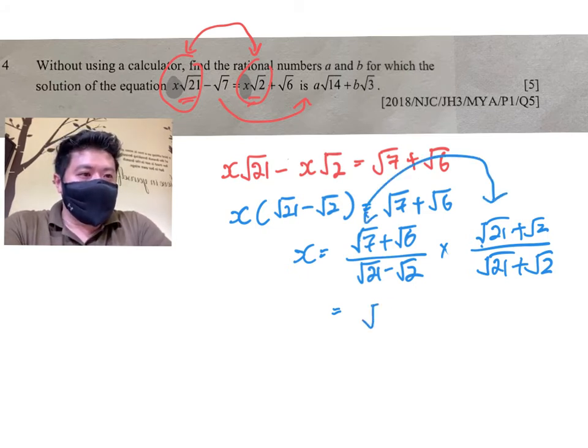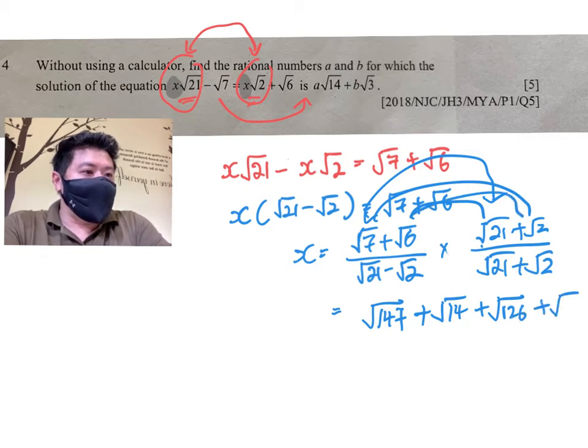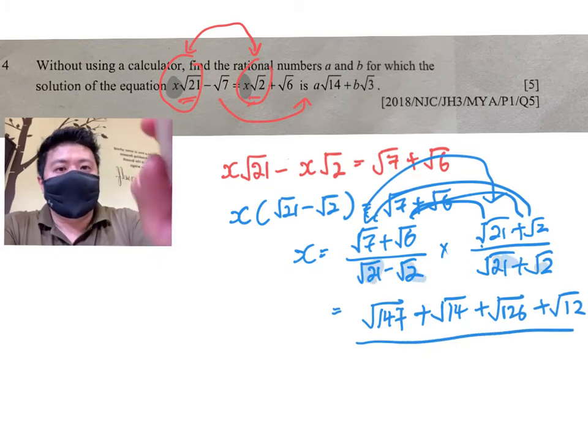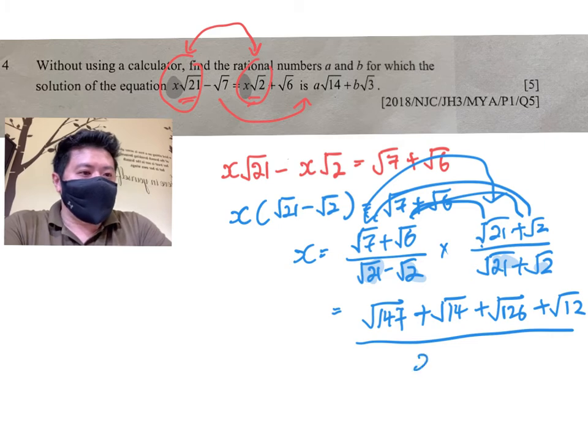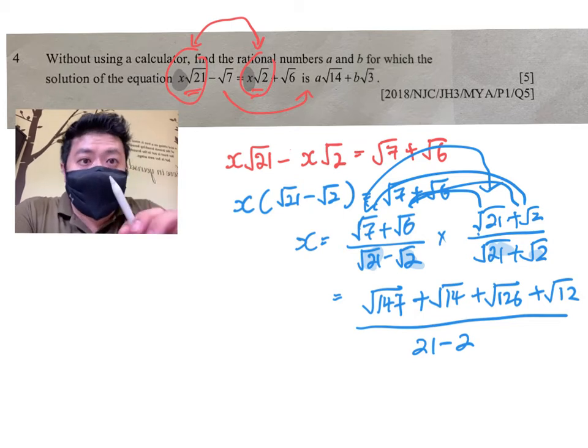So this portion, we push out the conjugate. After that: 7 to 21 will be √147, 7 to 2 will be √14, 6 to 21 will be √126, 6 to 2 will be √12. Your denominator basically is just a minus b times a plus b, which gives you a² minus b², which is 21 minus 2.